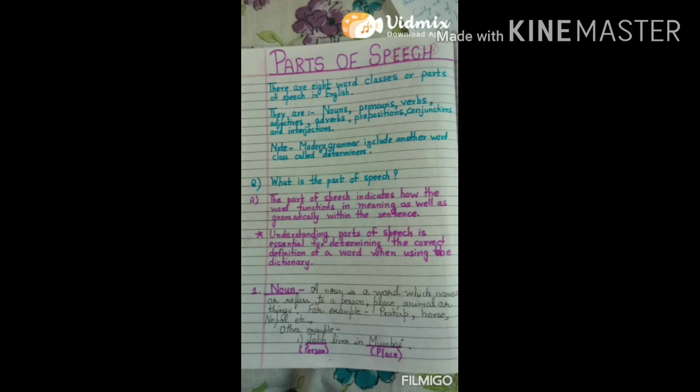For example: Pratap, Horse, Nepal, etc. Another example — John lives in Mumbai. Here, John is a noun as it is the name of a person, and Mumbai is a noun as it is the name of a place.